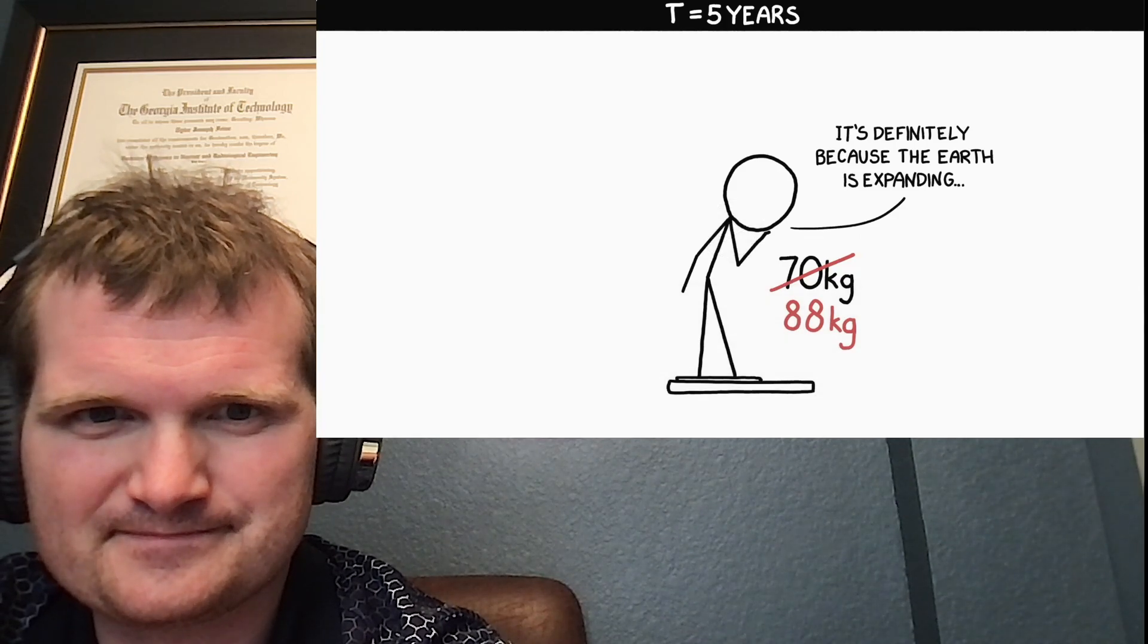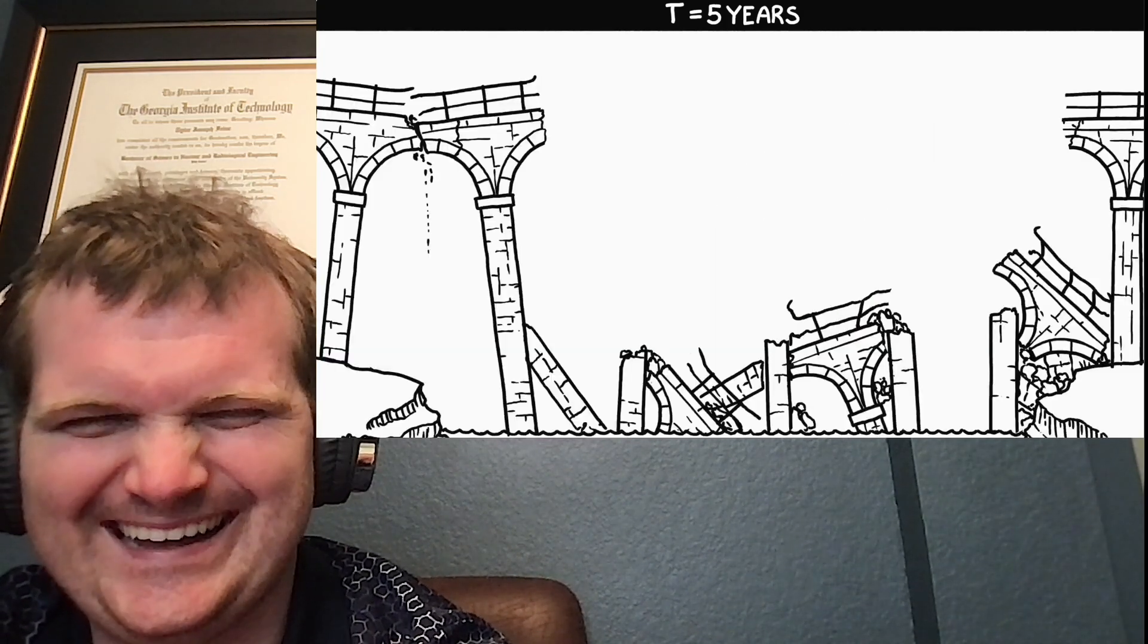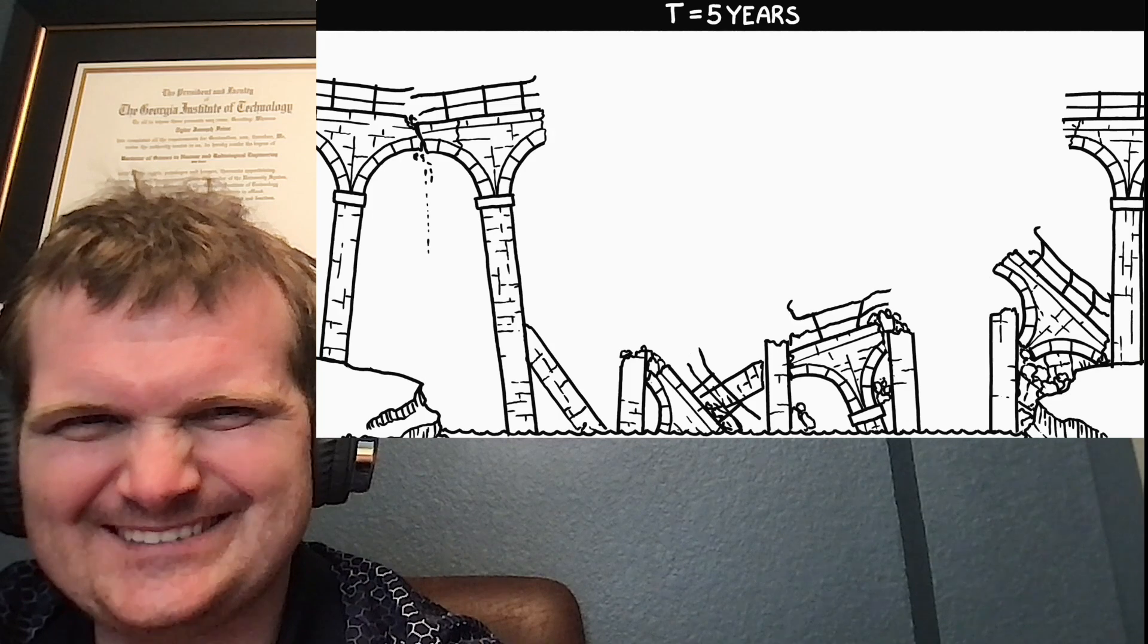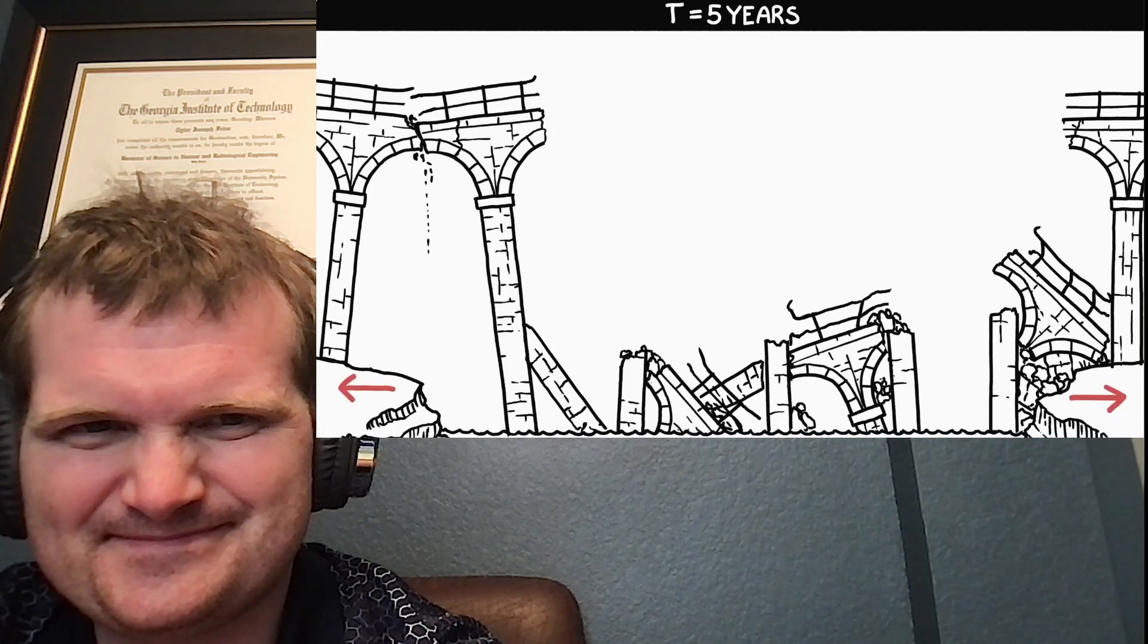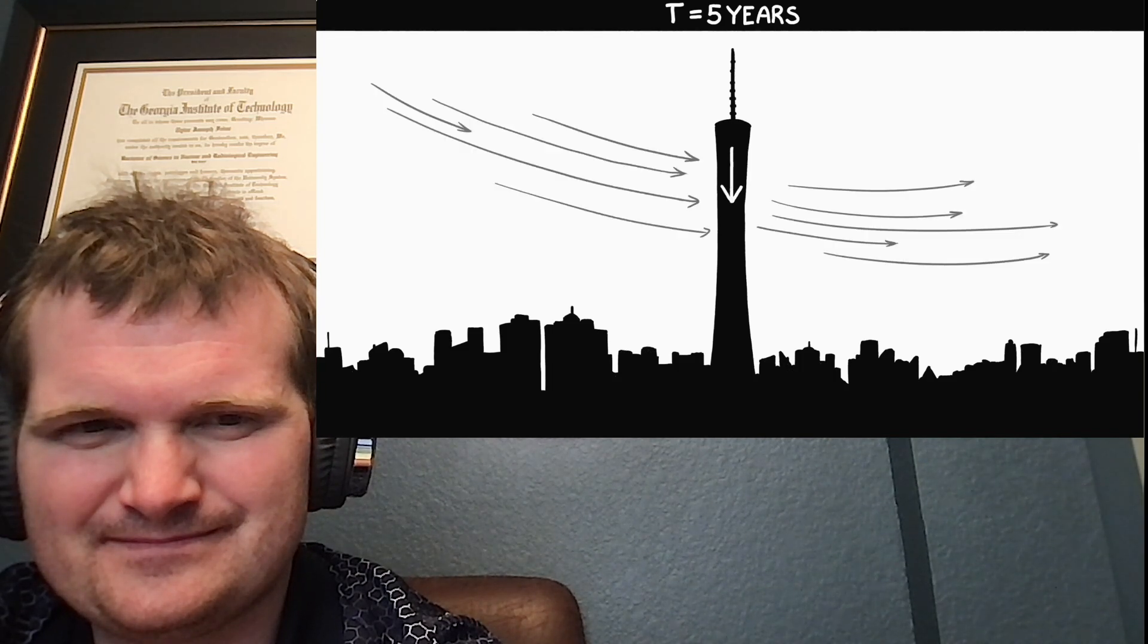If you weighed 70 kilograms when the expansion started, you'd weigh 88 now. Most of our infrastructure would have collapsed. The cause would be the ground expanding by 25%, not the increased gravity. Surprisingly, most skyscrapers would hold up fine under much higher gravity. The limiting factor isn't weight, but sheer forces like wind or the ground expanding.